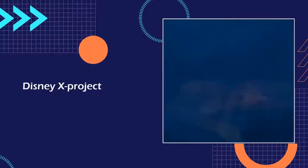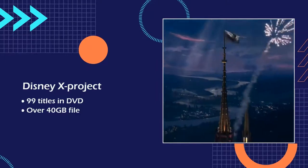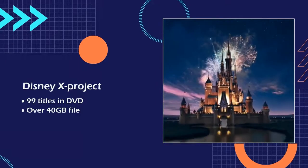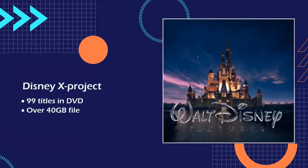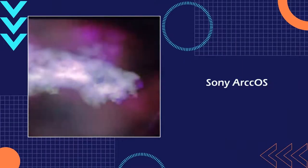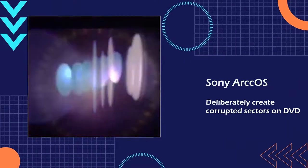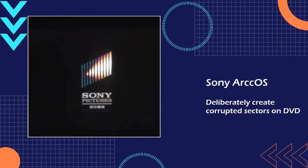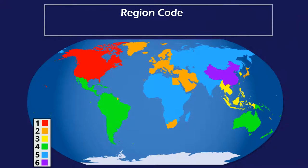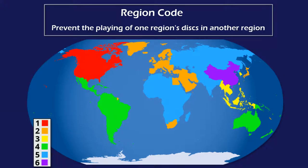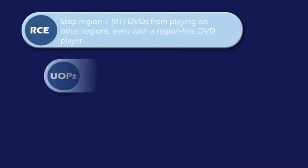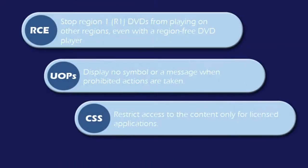Disney X Project puts 99 titles in your DVD and makes the file size reach over 40 gigabytes. Sony ARC-COS deliberately creates corrupted sectors on DVD. Region code prevents the playback of one region's disks in another region. RCE, UOPs, CSS, and other DRMs use their unique algorithms to protect content.